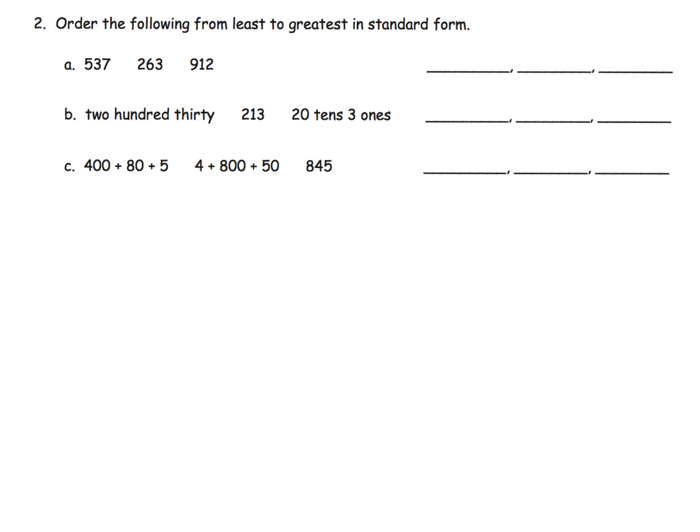So we're supposed to compare from least to greatest and then we'll write the numbers in standard form. Let's do problem B because that's the one that's kind of the weirdest. So first number is 230. I think many second graders can jump straight to the idea of 230. And then of course we have 213, that's pretty straightforward. And then what might be a little tricky is this last number, 20 tens and three ones.